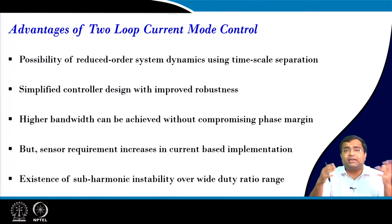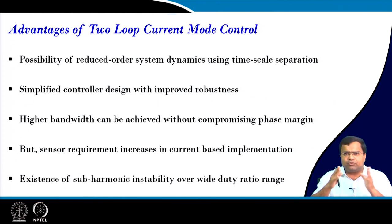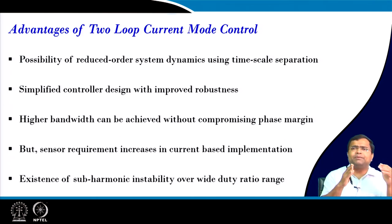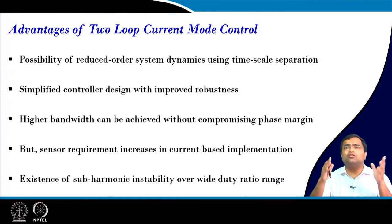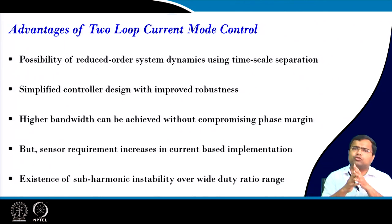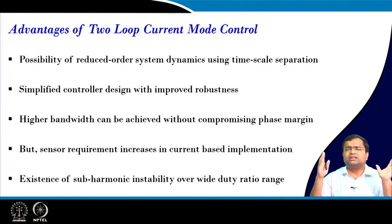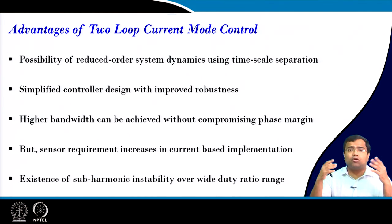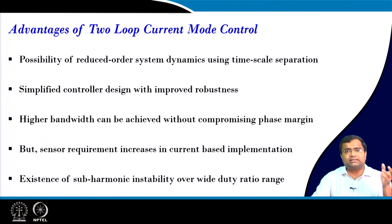In fixed frequency current mode control — peak or valley — there are stability issues in the inner current loop. For peak current mode control, deviating from 50% duty cycle (going above roughly 0.4 or higher) when both loops are closed at higher gain can result in inner loop instability and subharmonic oscillations. Similarly, for valley current mode control at low duty cycle you get significant subharmonic oscillation problems. To overcome this you need to add ramp compensation, but excessive ramp compensation will make the system slowly behave like voltage mode control.